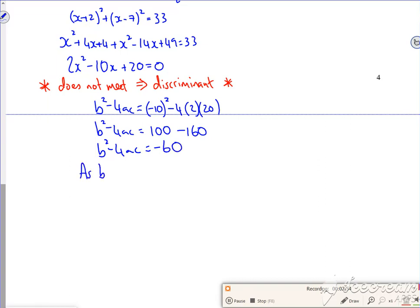So as b squared minus 4ac is less than zero, there is no point of intersection between the circle and the straight line.